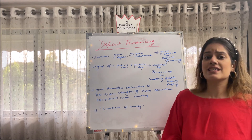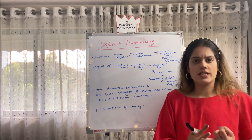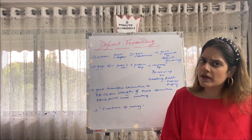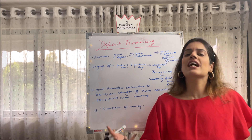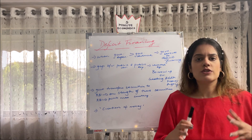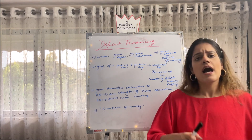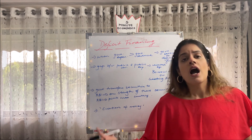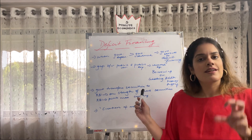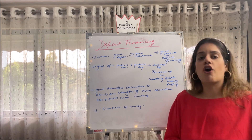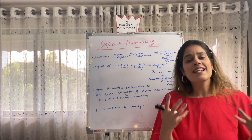It has also been defined as the gap between public revenue and public expenditure, which can be covered in two ways: either the government can borrow money, or the government has the authority to print additional money. The government transfers some securities to the RBI, and on the basis of those securities, the RBI prints more currency. Basically, deficit financing means creation of money.